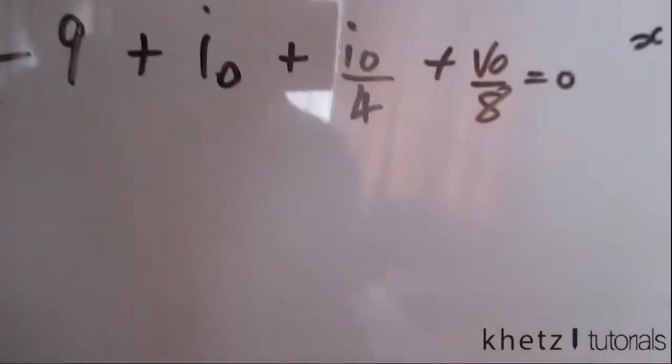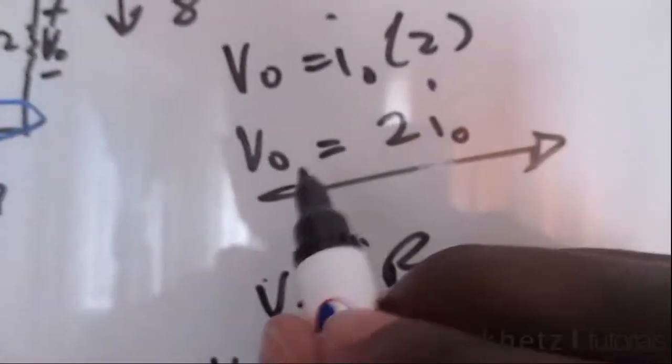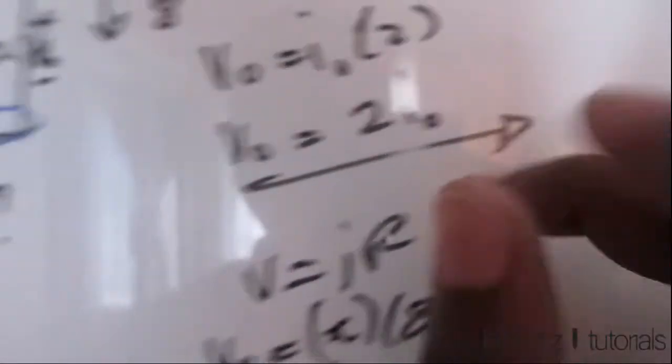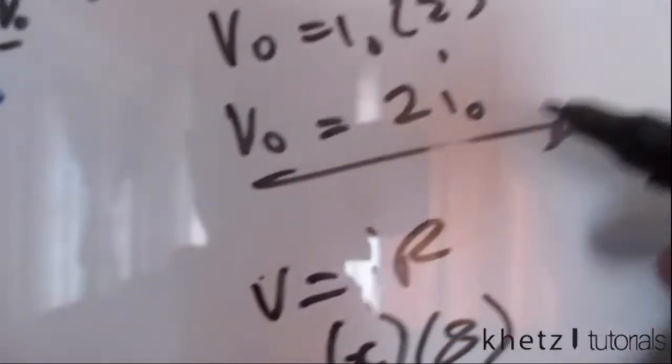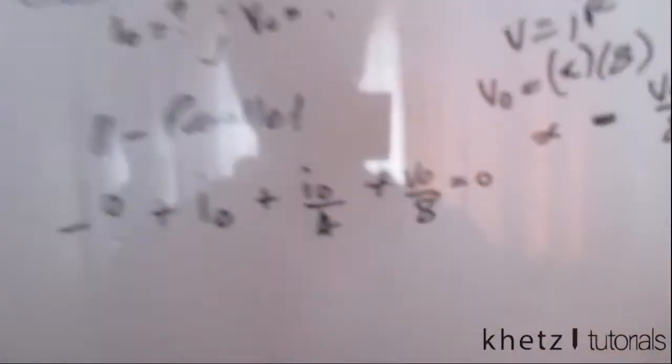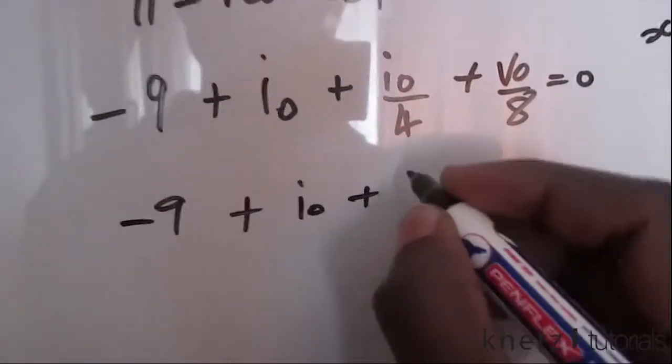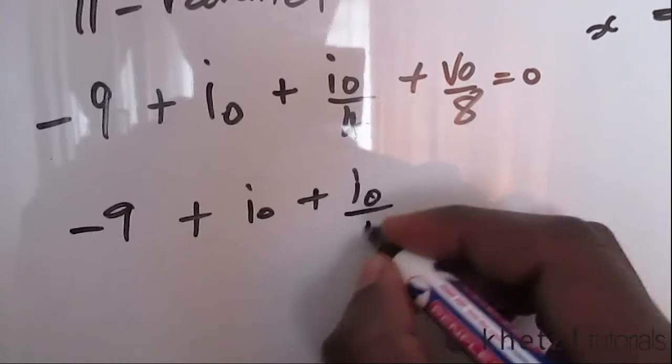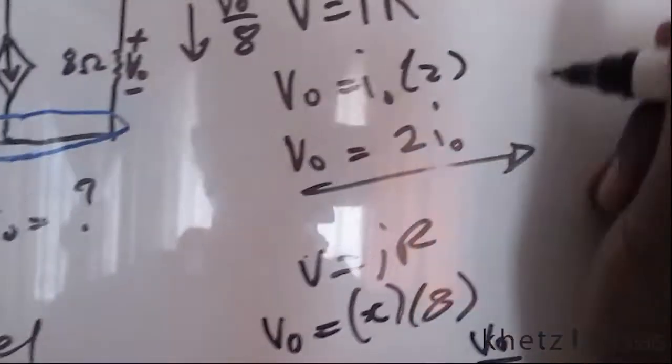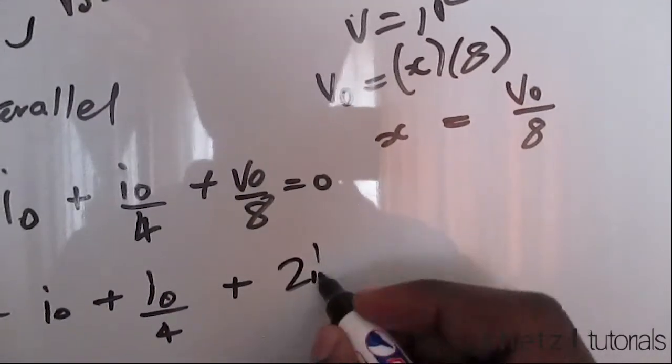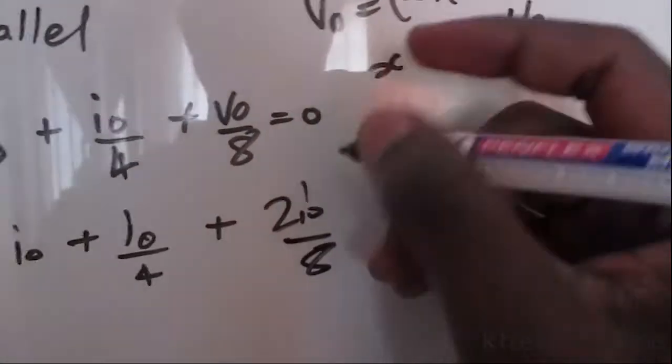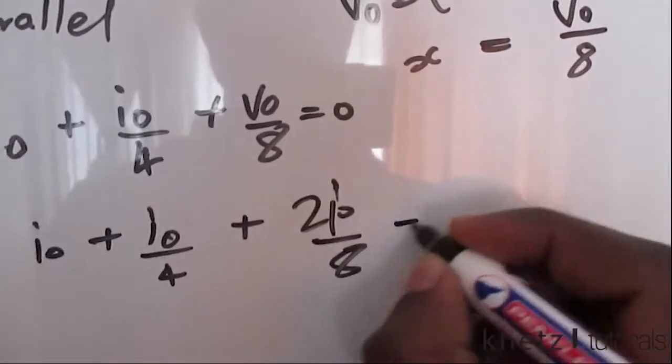Now we formed this relationship earlier which says v₀ equals 2i₀, so we can substitute that here. So minus nine plus i₀ plus i₀ plus i₀ over four plus substituting that, 2i₀ over eight, is equals to zero.